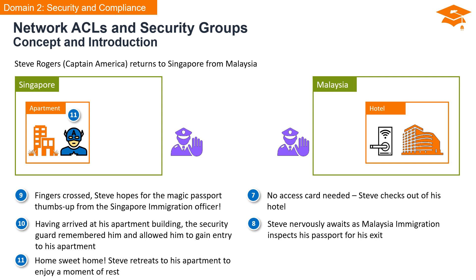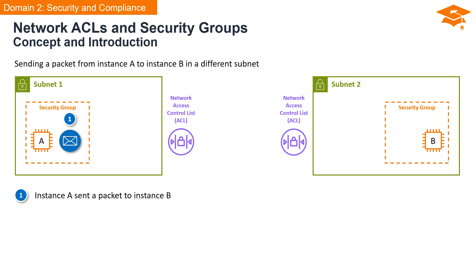Now let's relate these scenes to AWS Network ACL and security groups. You should have a clear understanding of network access control lists and security groups using our analogy featuring Steve Rogers, or Captain America. Imagine that subnet 1 represents Singapore and subnet 2 is Malaysia. Steve's journey mirrors the traffic between AWS subnets — subnet 1 symbolizing Singapore and subnet 2 representing Malaysia.